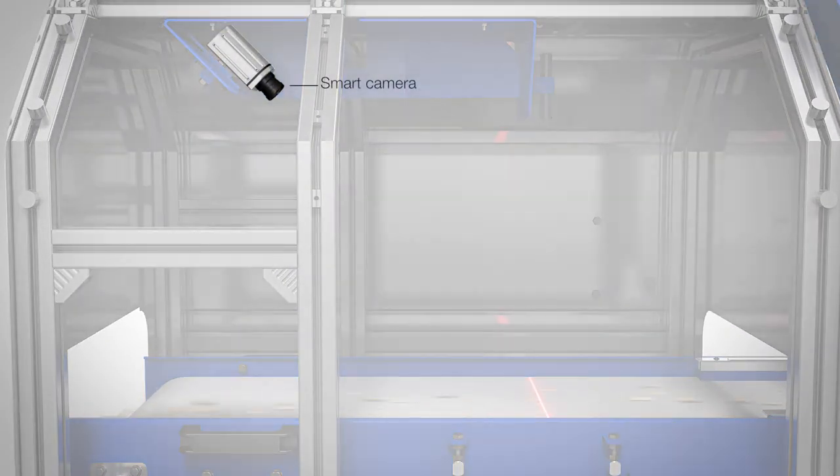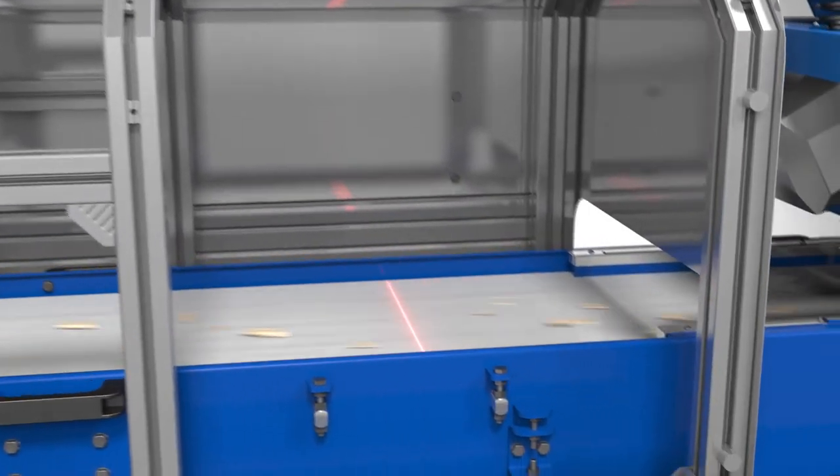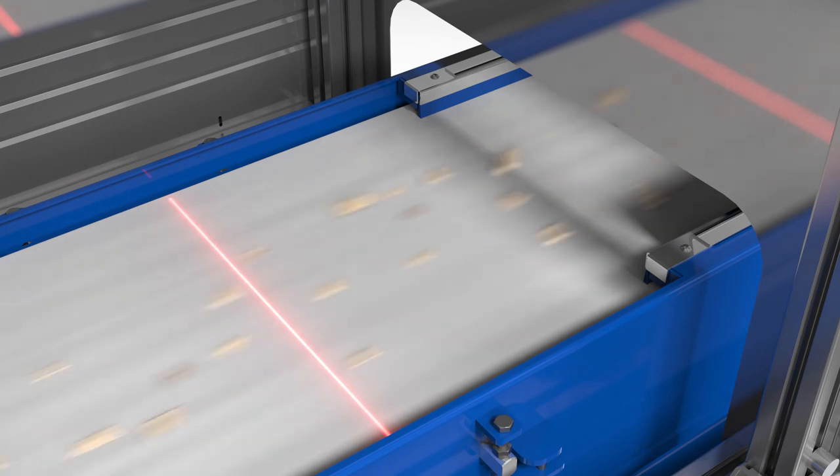A smart camera and a line laser are mounted above the measurement conveyor. A laser line is projected onto the conveyor and recorded by the camera. Changes in the shape of the laser line, recorded at high frequency, allow the length, width, and thickness of the chips to be determined.